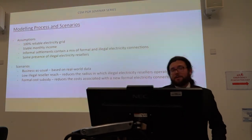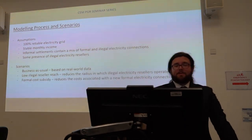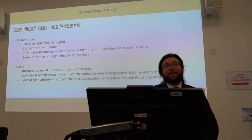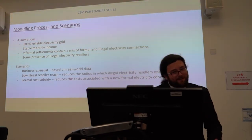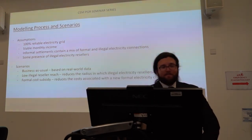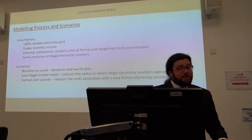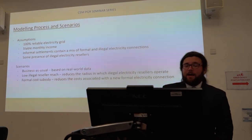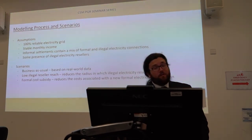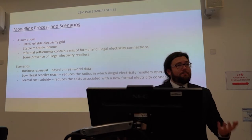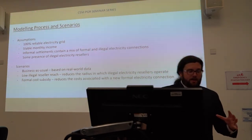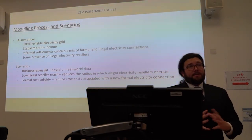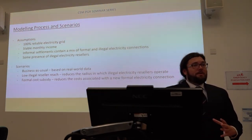With any modelling process you need to make some assumptions. For this model I assume a 100% reliable electricity grid — anyone who knows the South African electricity network will raise a red flag at this point, but for the purposes of this model I assume it. I also assume agents have a stable monthly income, that informal settlements contain a mix of formal and illegal electricity connections, and that there is some presence of illegal electricity reselling within a settlement — an agent with a formal connection selling electricity on a third-party basis to others around them.